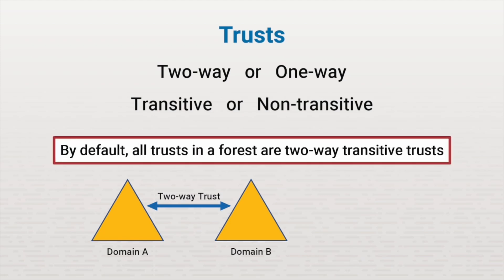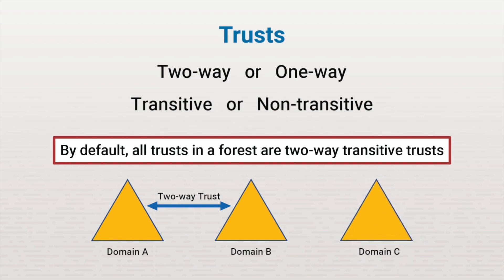All trusts in a forest are two-way transitive trusts by default. The word transitive means to pass through or transfer. A transitive trust means that the trust relationship between two domains is extended to the other transitively trusted domains in the forest. For example, if domain A trusts domain B and domain B trusts domain C, then domain A also trusts domain C.